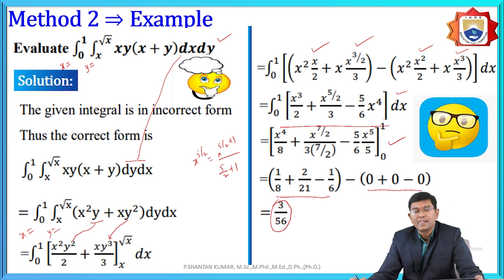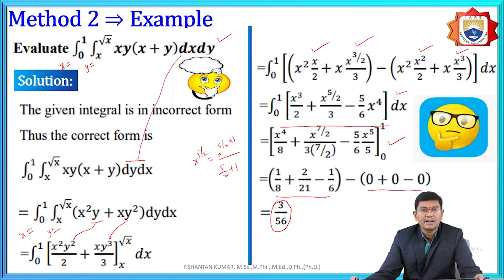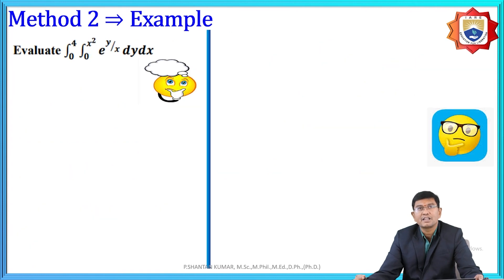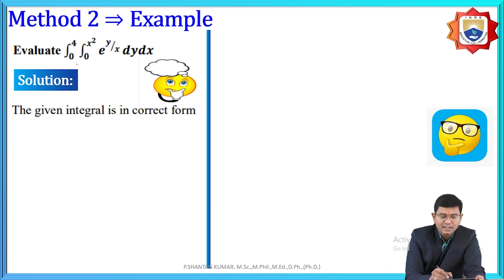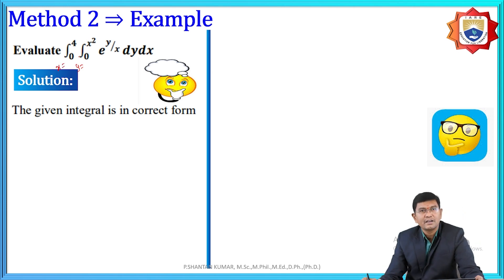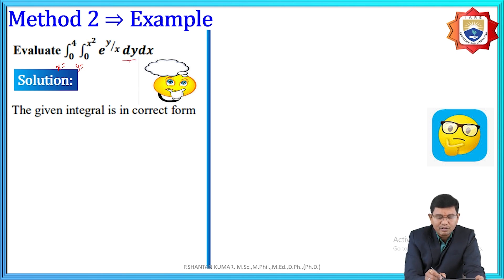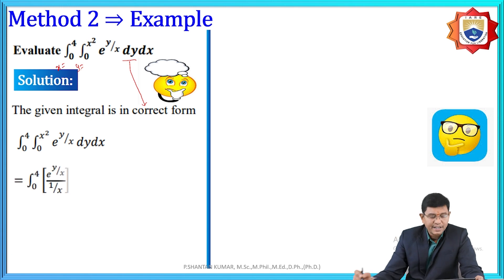To summarize: in double integration with variable limits, whenever limits are in terms of x, treat them as y-limits and integrate with respect to y first, then with respect to x. Similarly, if limits are in terms of y, treat them as x-limits and integrate with respect to x first, then with respect to y. These are the fundamental processors for double integration with variable coefficients.